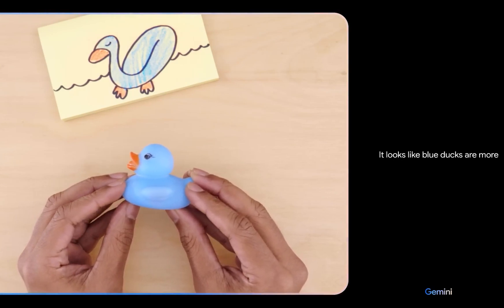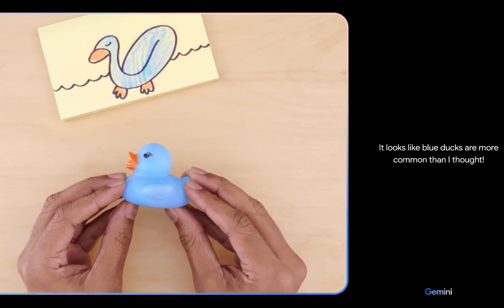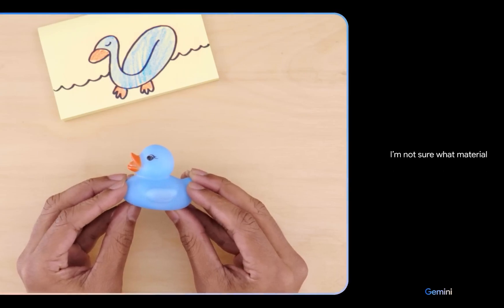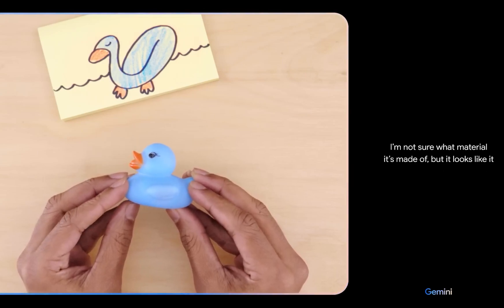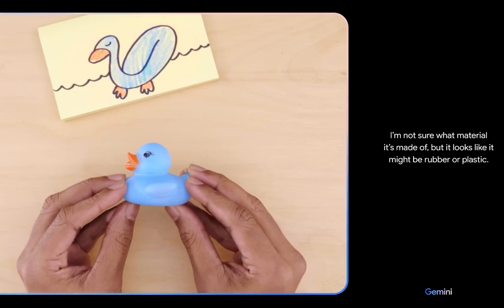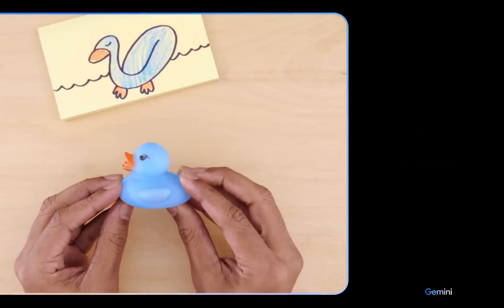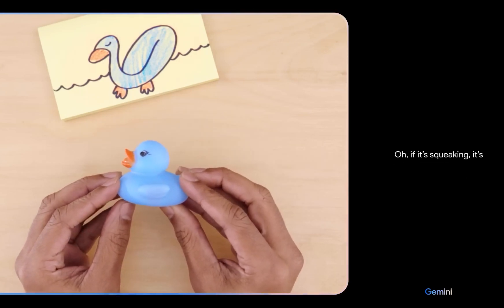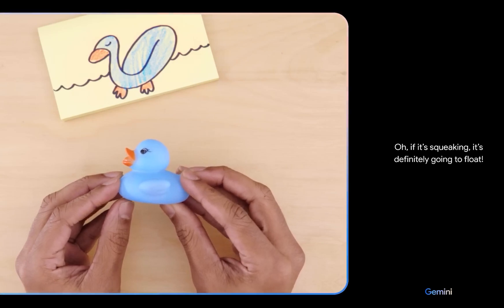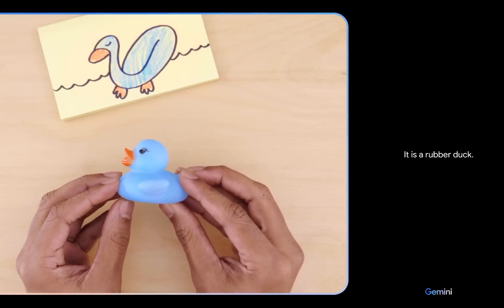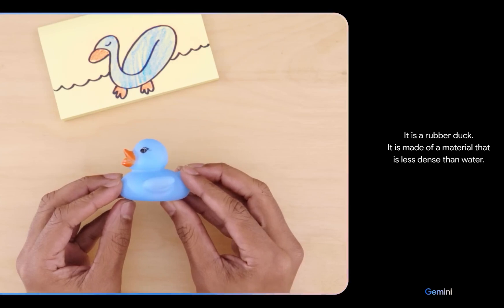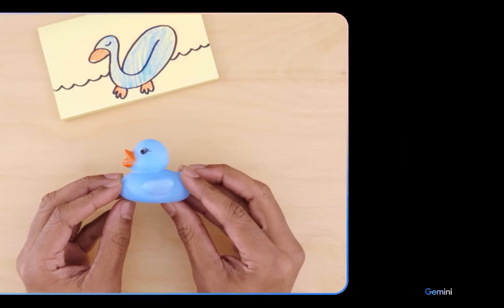It looks like blue ducks are more common than I thought. Would this float? I'm not sure what material it's made of, but it looks like it might be rubber or plastic. What if I tell you it's making a squeaking sound? Oh, if it's squeaking, it's definitely going to float. Nice! It is a rubber duck. It is made of a material that is less dense than water.